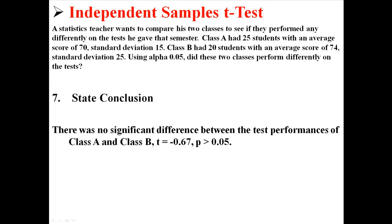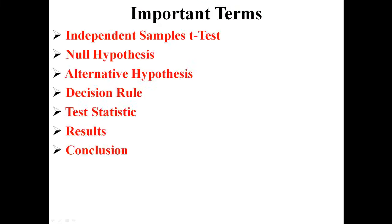And that's what our conclusion would be. There was no significant difference between the test performances of class A and class B. t equals negative 0.67 with probability greater than 0.05. We can conclude that there is no difference between class A and class B. And that is an independent samples t-test.